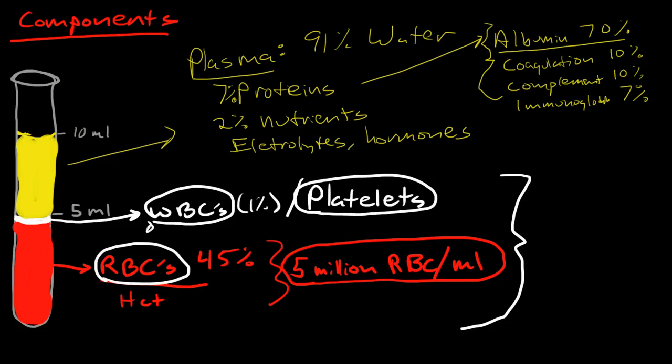Immunoglobulins make up about 7% to 10%, and complement and other immunologic proteins make up around 10%. Albumin is the major protein within plasma. It's the major component that creates oncotic pressure and keeps fluid inside the vasculature.